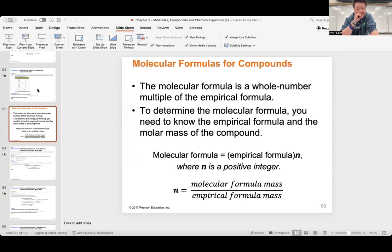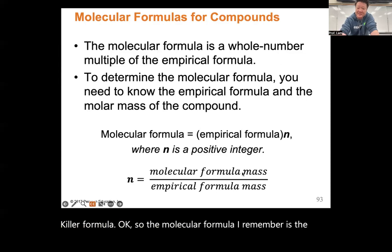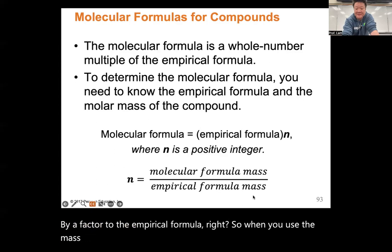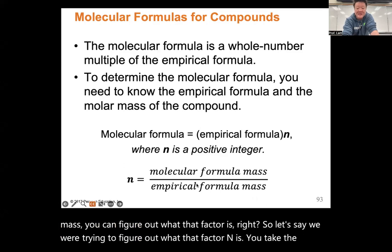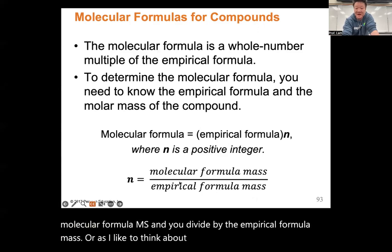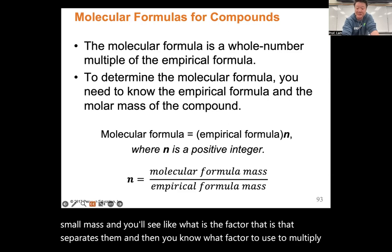You guys know the steps, and we're going to be using the same steps, but now we're also going to try and determine the molecular formula. The molecular formula is the big formula, and it differs by a factor from the empirical formula. So when you use the mass, you can figure out what that factor is. To find factor N, you take the molecular formula mass and divide by the empirical formula mass — or take the big mass divided by the small mass — to see what factor separates them. Then you know what factor to use to multiply up to get your molecular formula.